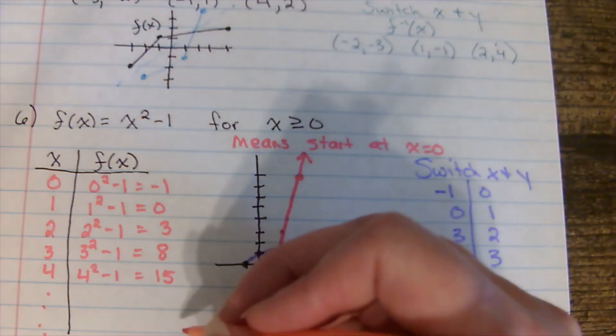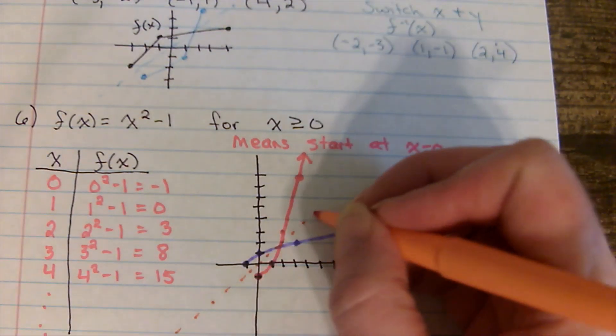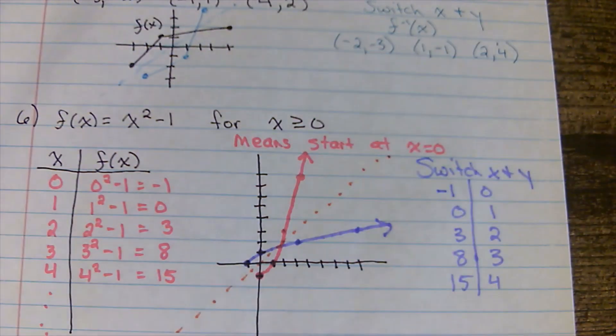If I drew a line down the middle, a diagonal, which always happens with inverses.